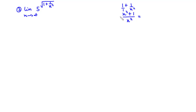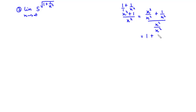The highest power here is x², so we divide each term by x²: (x²/x²) + (1/x²) all over (x²/x²), which gives 1 + 1/x² over 1 — the same expression we started with. You can think of directly substituting infinity into this function, but it's always appropriate to use the method we've applied in the previous examples.